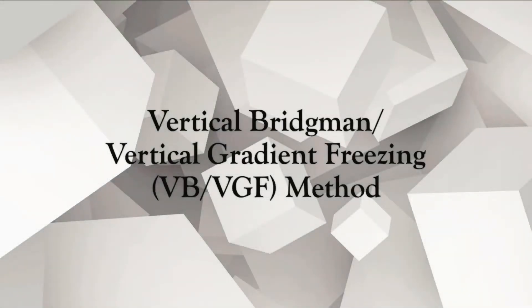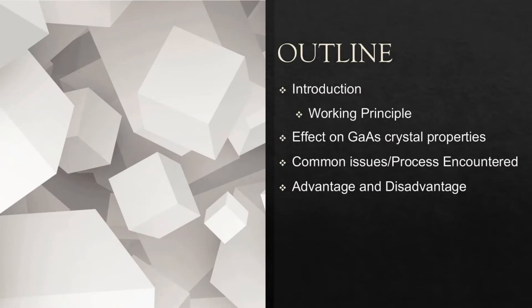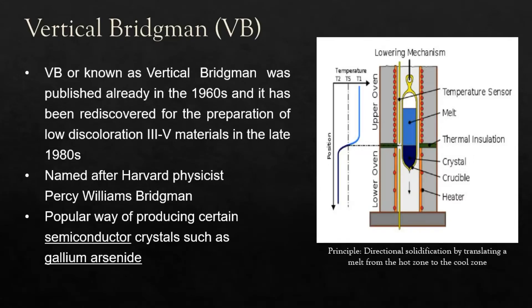Good day! Today I will discuss the VB and VGF methods. First, I will give a short background about the method and how it works, then the advantages and disadvantages of VB and VGF. The vertical Bridgman, or VB method, was published in the 1960s and rediscovered for preparation of low-dislocation III-V materials in the late 1980s. Named after Harvard physicist Percy Williams Bridgman, it is a popular way of producing semiconductor crystals such as gallium arsenide. The diagram shows directional solidification by translating a melt from the hot zone to the cool zone.